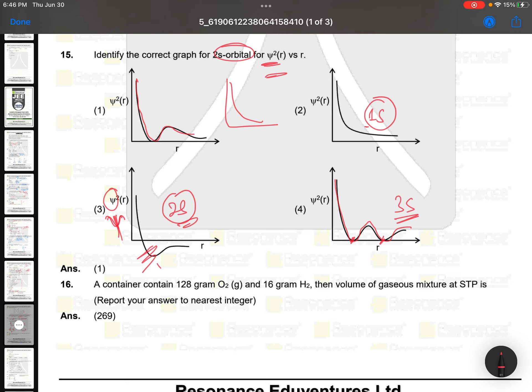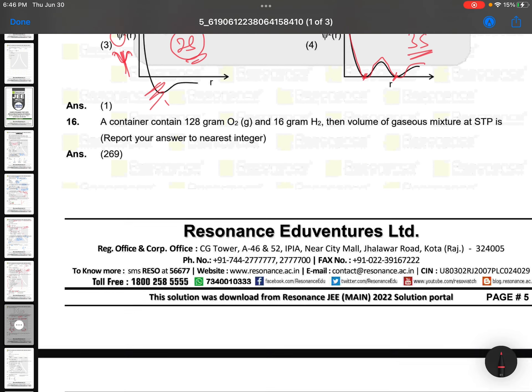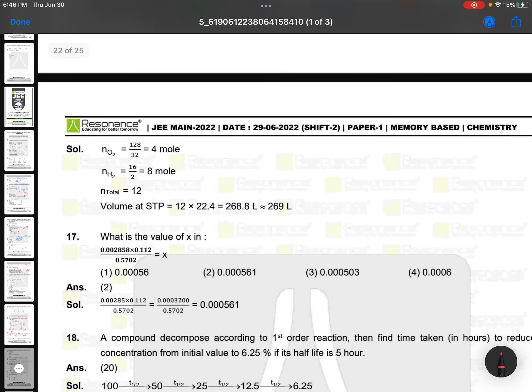This is a simple question. A container contains 128 grams of O2, means 4 moles. 128/32 is 4 moles. 16 grams of hydrogen, 16/2 = 8 moles. So total number of moles will be 12 moles. 12 × 22.4 liters = 269. Simple.